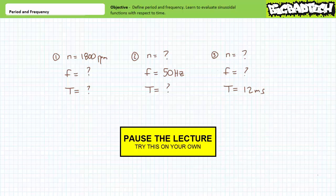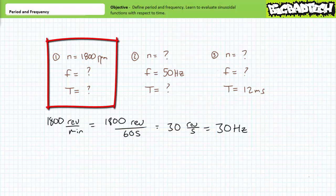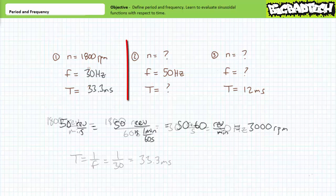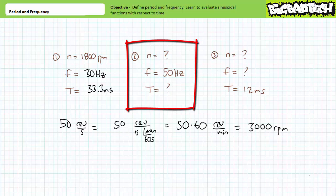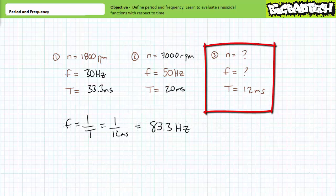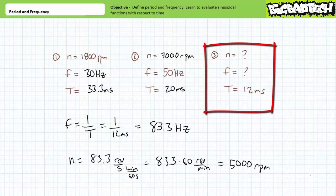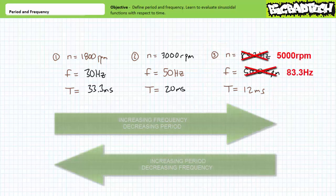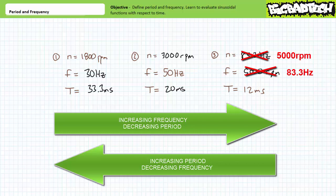Pause the lecture and give this your best shot. Given a rotational speed of 1,800 RPM, we can perform a unit conversion to show that this is a frequency of 30 Hertz. Inverting this frequency, we find a period of approximately 33.3 milliseconds. Given a frequency of 50 Hertz, a unit conversion shows this is a rotational speed of 3,000 RPM, with a period of 20 milliseconds. Finally, given a period of 12 milliseconds, inverting this yields a frequency of approximately 83.3 Hertz, and a unit conversion demonstrates a rotational speed of 5,000 RPM. Note the inverse ratio of frequency and period: as frequency increases, period decreases, and vice versa.